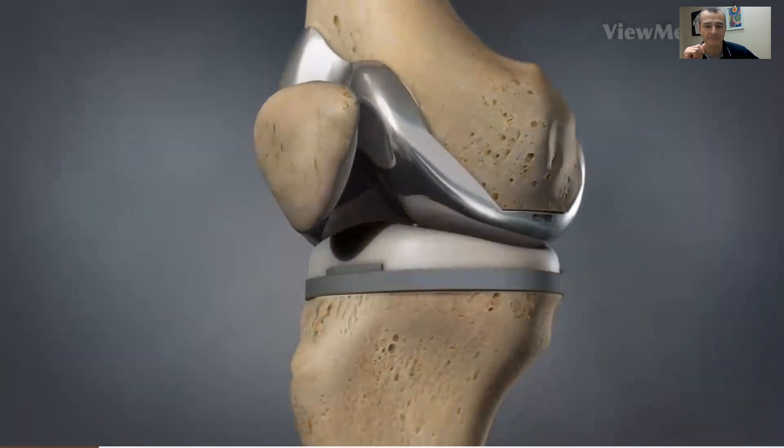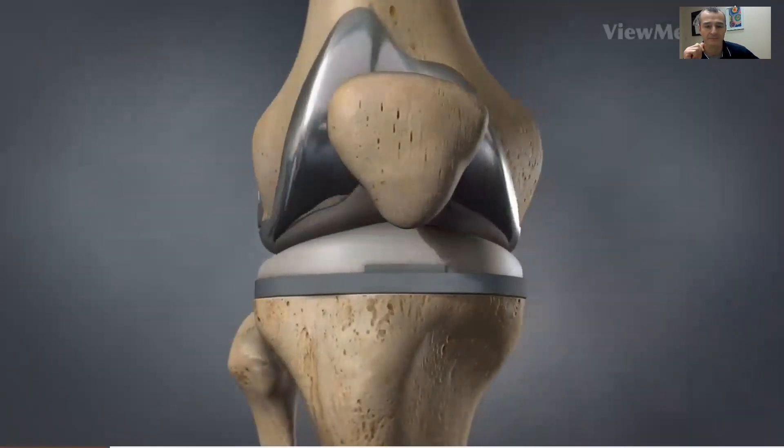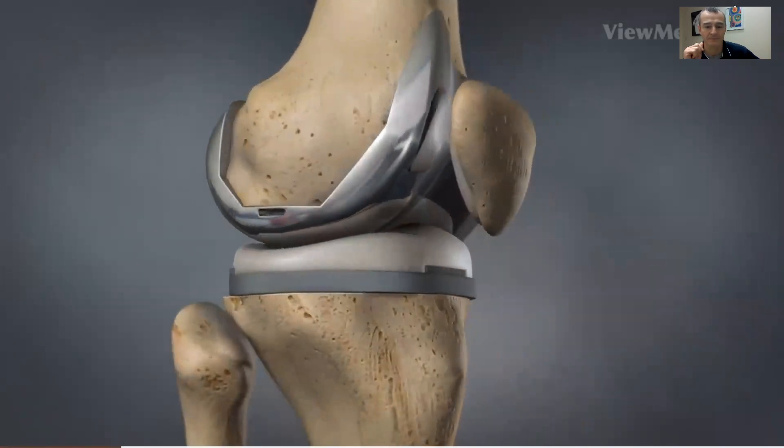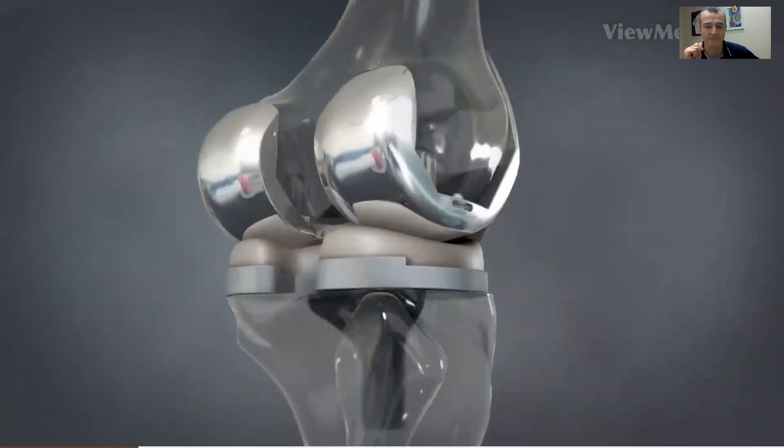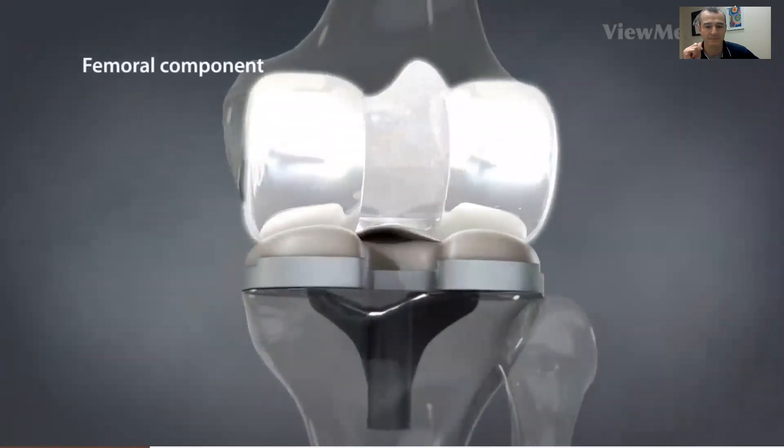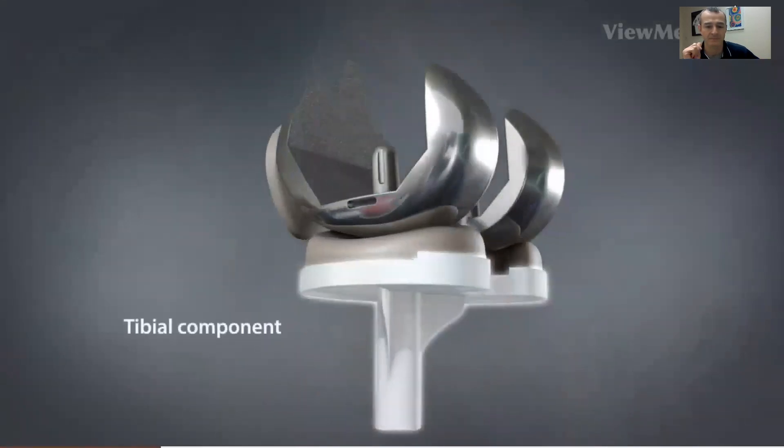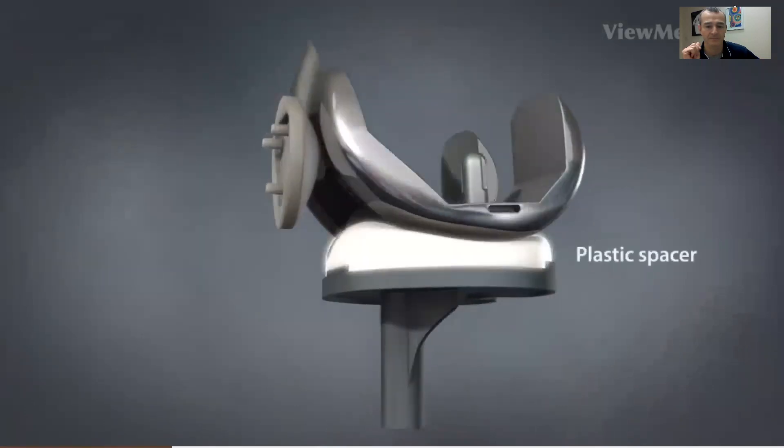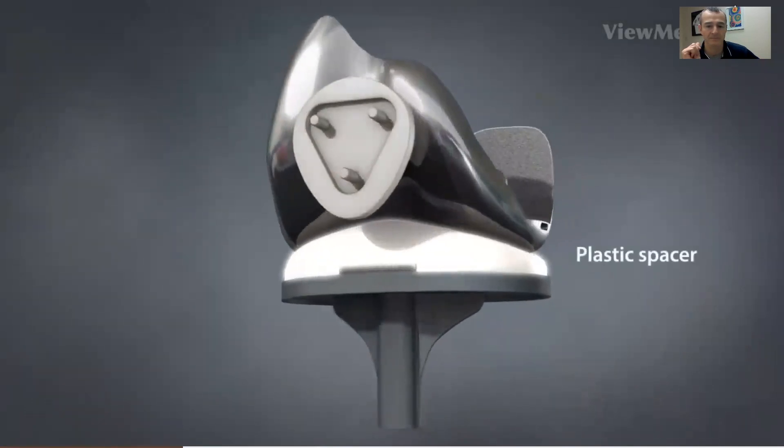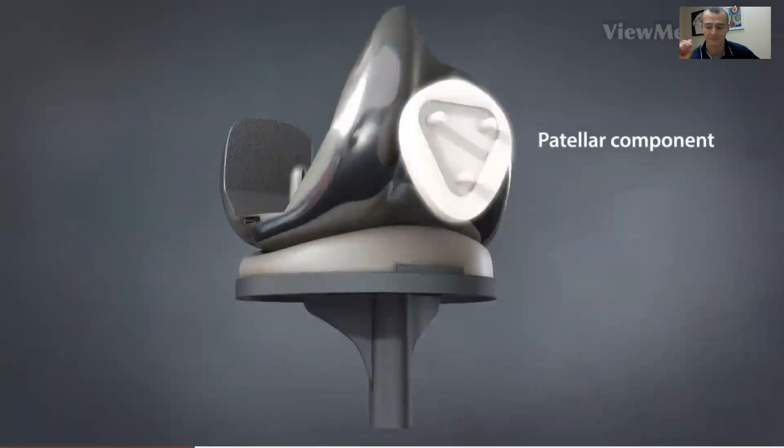During the procedure, the surgeon replaces the damaged portions of the knee with artificial parts. These parts consist of a metal femoral component, a metal tibial component, and a plastic spacer. A small plastic patellar component may also be used.